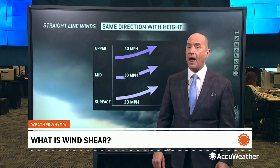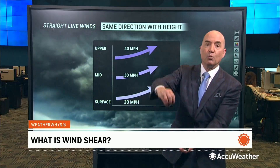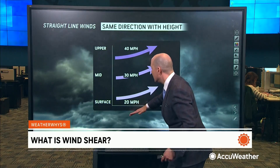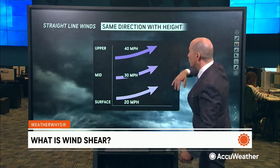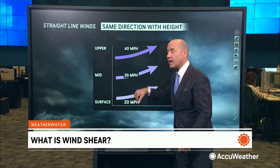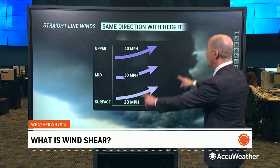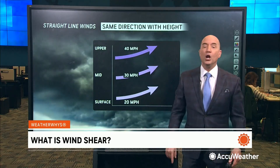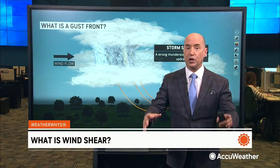Let's talk about when you have increasing wind speed with height, but the direction is the same from the surface through the upper part of the atmosphere — in this case, out of the West Southwest. When you have this set of criteria, you're generally not going to get tornadoes. You're going to get straight-line winds.